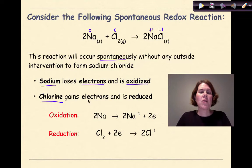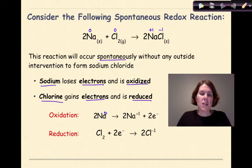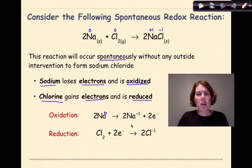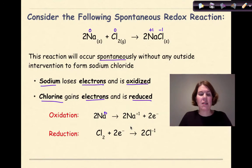The chlorine is going to gain electrons and be reduced. Here are the half reactions: sodium starts out at zero and goes to plus one, losing a total of two electrons. Diatomic chlorine is going to gain two electrons and form two chloride ions. Based on everything we've learned in redox so far, this makes a lot of sense.